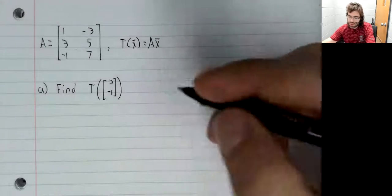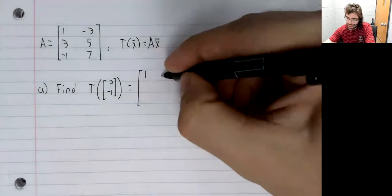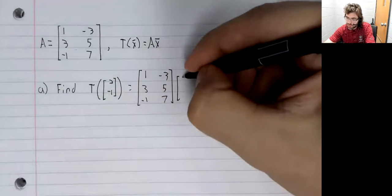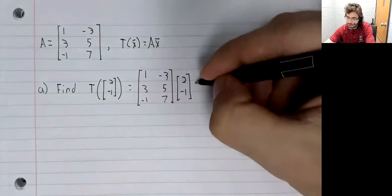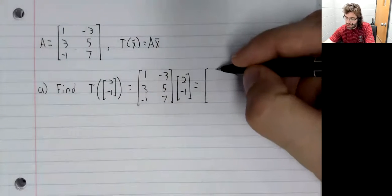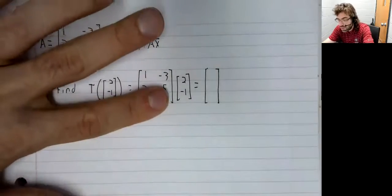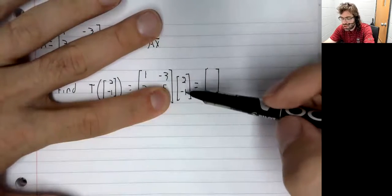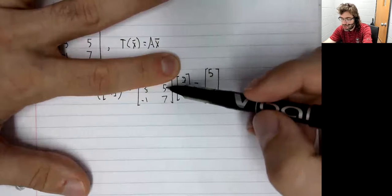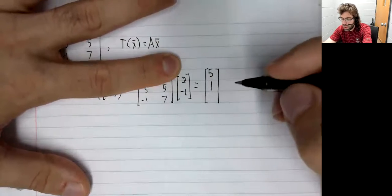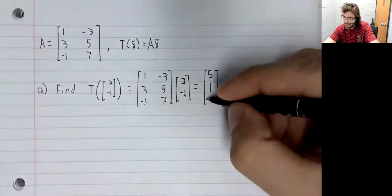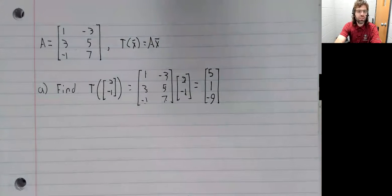T of this is A times this, which is a three by one vector. Two plus three is five, six minus five is one, negative two minus seven. There's the image of that vector.